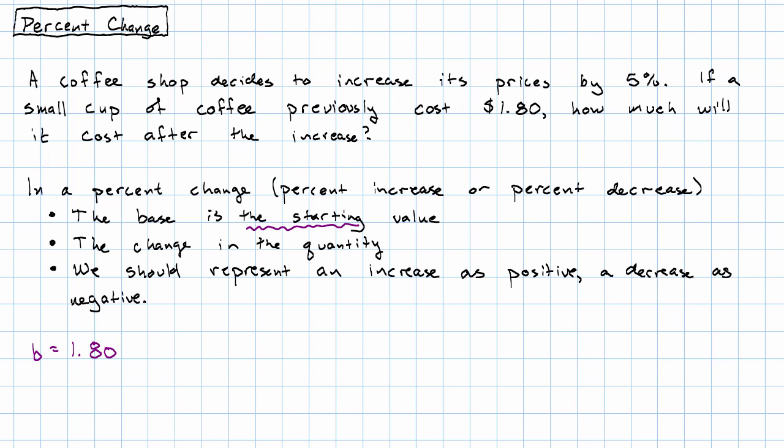We're told the percent, that's 5%, which if we write it as a decimal, is 0.05. And then, the portion is the change in the price.